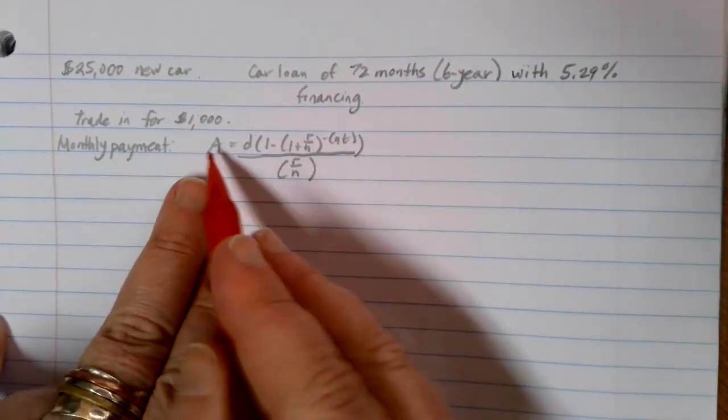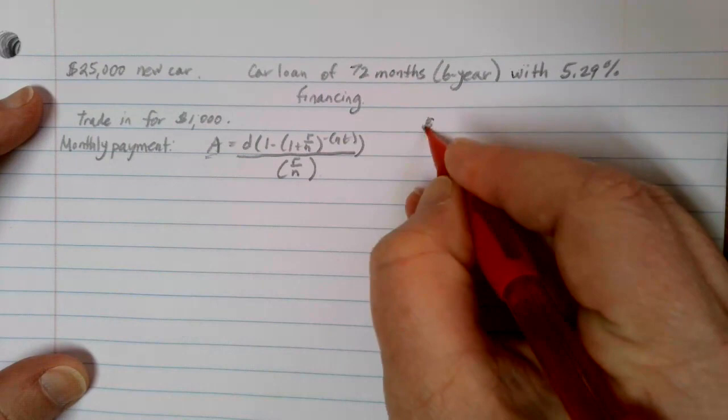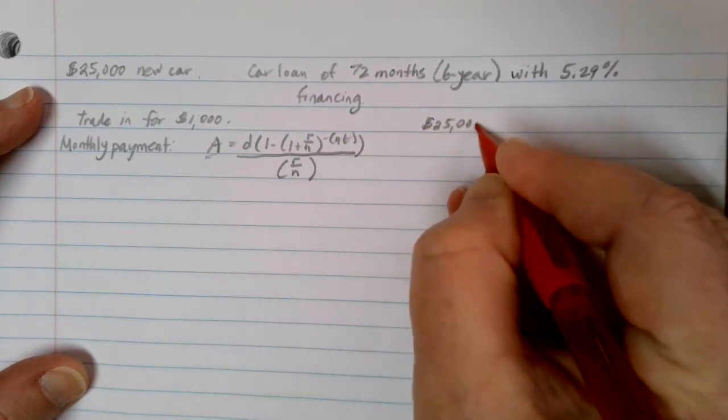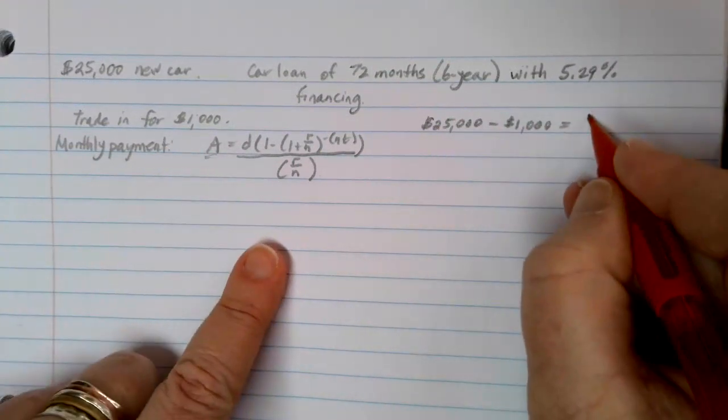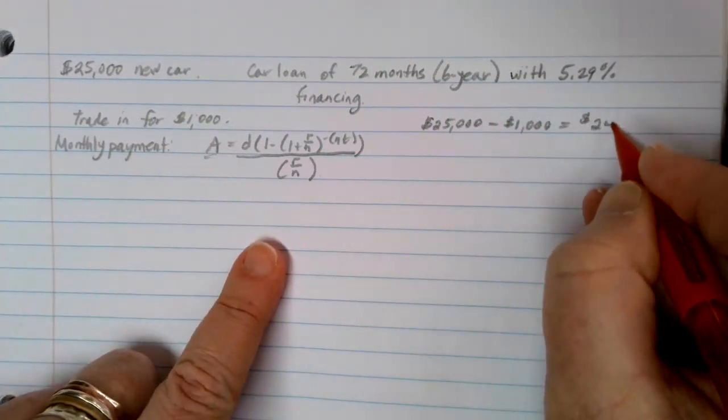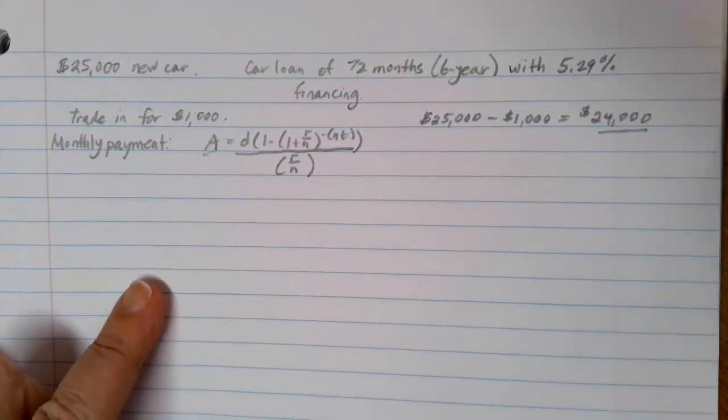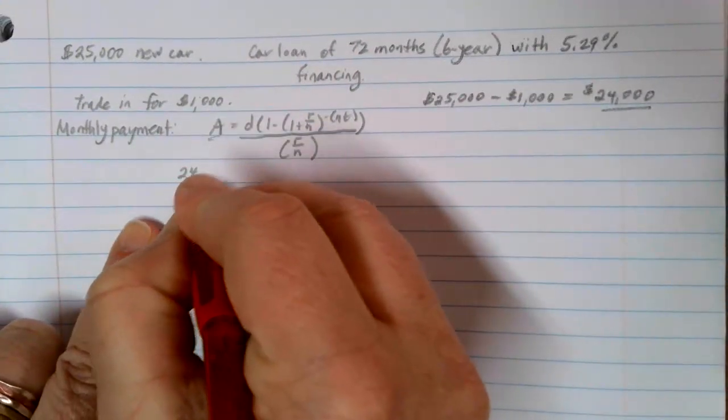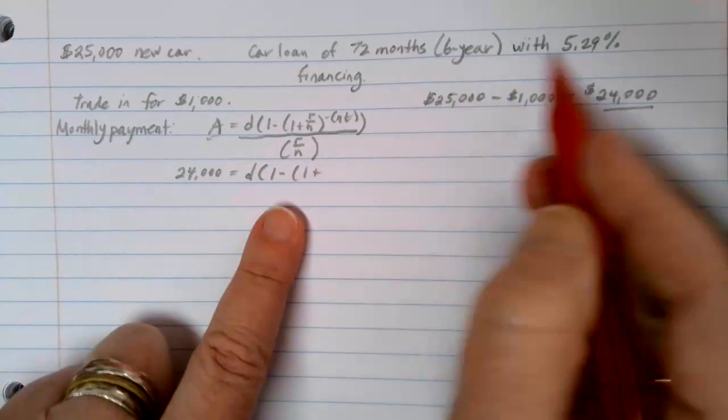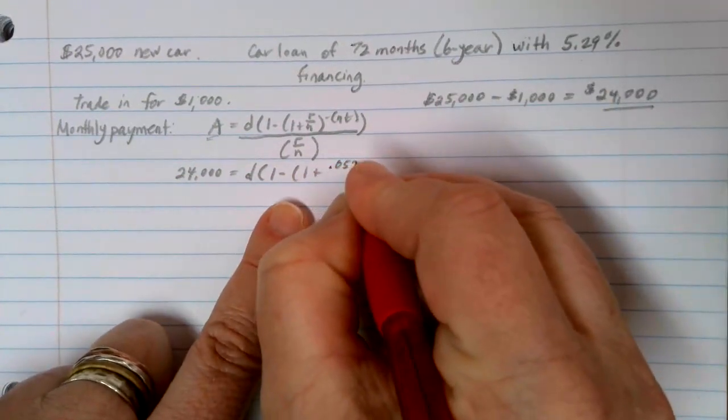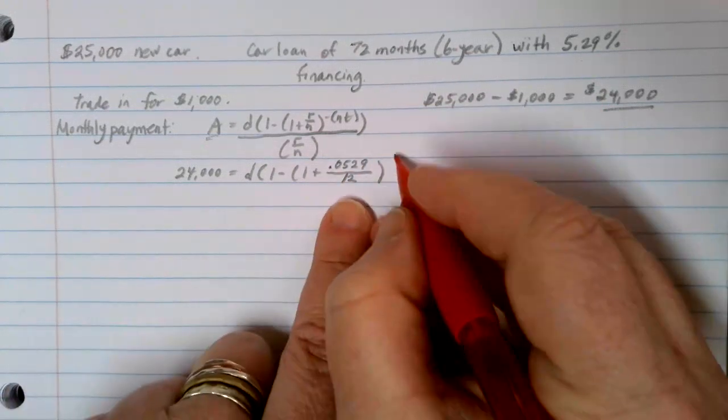If we want to figure out our monthly payment, the first thing we need to know is the amount of the loan. In this case, we were buying a $25,000 car, but we were able to cash in $1,000 worth of value towards my purchase, which means I'm only going to have to borrow $24,000. So that's going to be the A value that I use in the formula. My rate is 5.29%, so 0.0529. We're doing monthly payments, so we're going to divide by 12.